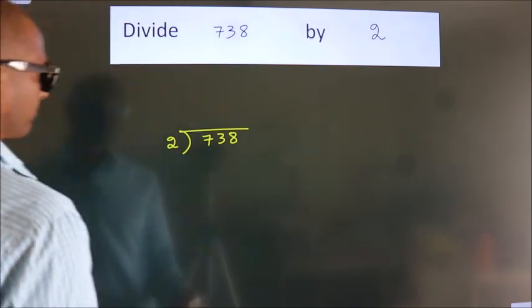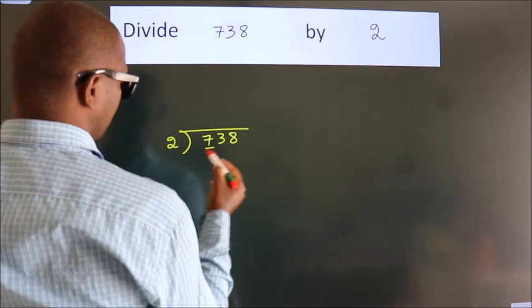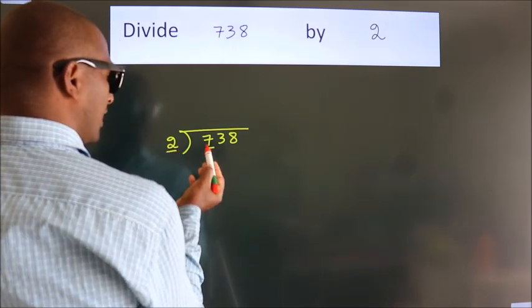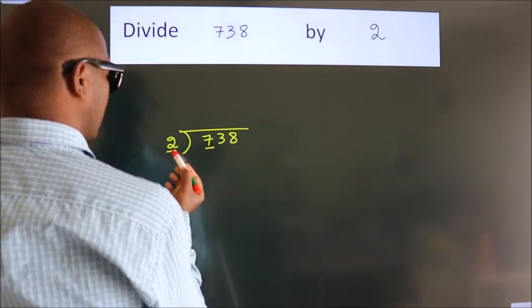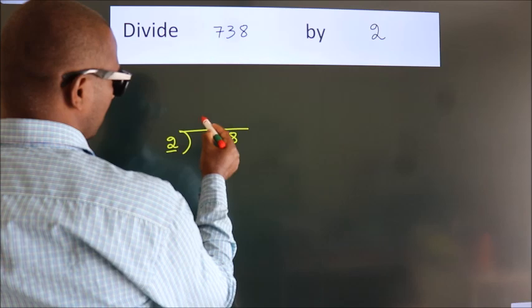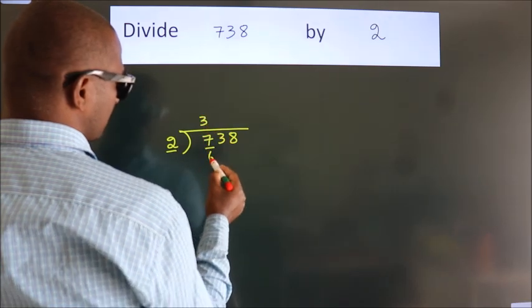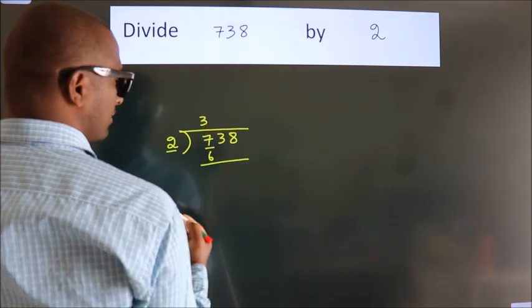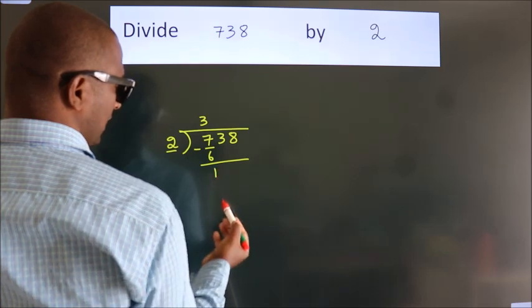Next, here we have 7, here 2. A number close to 7 in the 2 table is 2 times 3 is 6. Now we subtract and get 1.